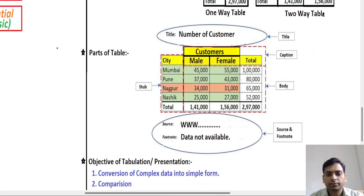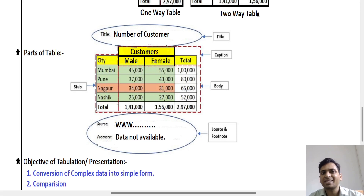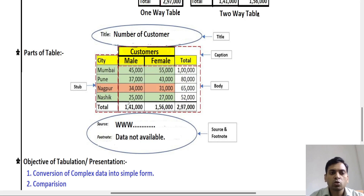Next are the parts of a table. The heading is the main title — for example, 'number of customers.' Column-wise titles such as customer, male, female, and total are called captions. Row-wise subtitles such as city names — Nagpur, Pune, and others — are called the stub. The actual numerical data collected is called the body, which is the main body of the table.